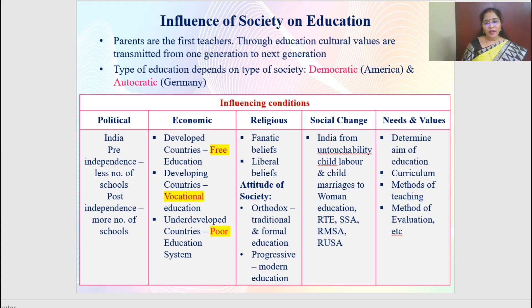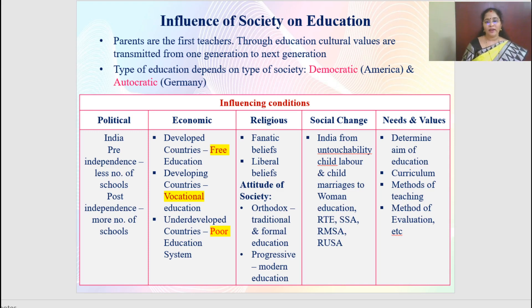Social changes have been brought about in education. In early India, superstitious beliefs and practices like untouchability, child labor and child marriages prevailed. Because of education, these were eradicated. People now give more importance to women's education. The Right to Education Act (RTE) and Sarva Shiksha Abhiyan (SSA), meaning education for all, are government policies enhancing quality education. Ultimately, society determines the aim, curriculum, method of teaching and method of evaluation in education.